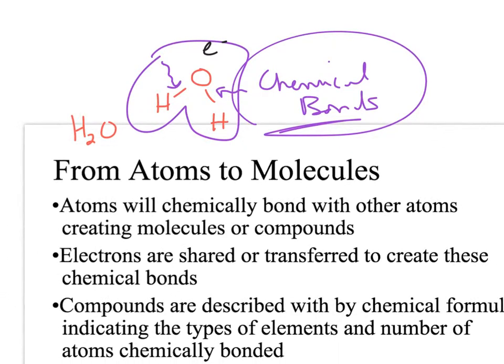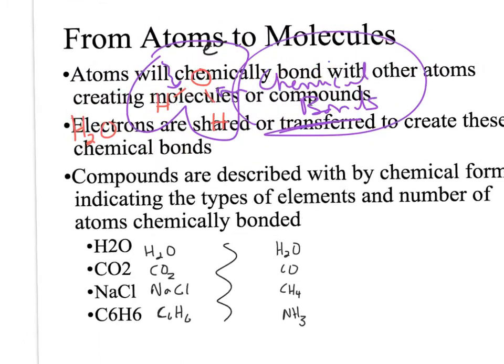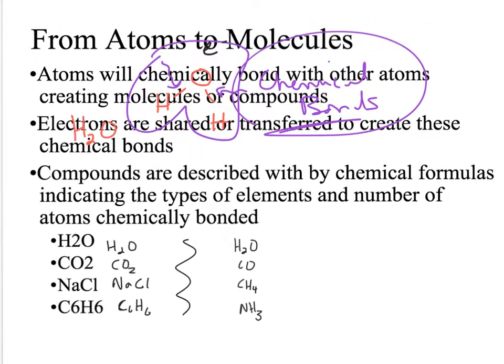The other thing I have down here is to bring up some formulas. You'll have to bear with me, my subscripts didn't transfer. The first one's water, the second one's carbon dioxide. You might recognize these are just examples of chemical compounds. NaCl is table salt, C6H6 is benzene.